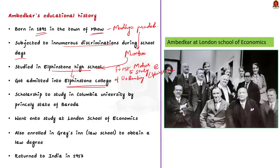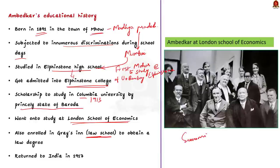The turning point of his life came in the year 1913. He was presented with a scholarship to study in Columbia University in New York, offered by the princely state of Baroda. After graduating from Columbia University, he went on to study at London School of Economics where he simultaneously started working on a doctoral thesis. At the same time, he enrolled in Gray's Inn to obtain a law degree — demonstrating how much Ambedkar studied simultaneously. Finally, in the year 1917, he returned to India after his scholarship from the Baroda state got exhausted.